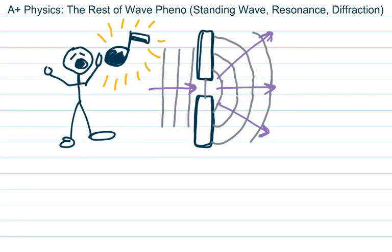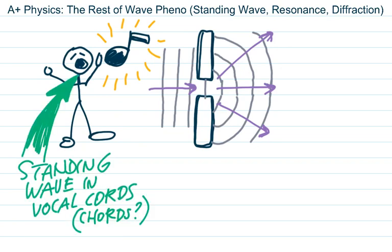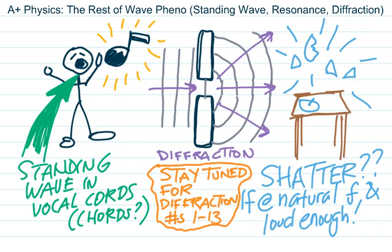To close: as a person sings, their vocal cords vibrate and create a standing wave that is amplified by their head. If they sing at a wall with a gap, and that gap is close to the wavelength of the sound wave, the sound will spread into the room — an example of diffraction.